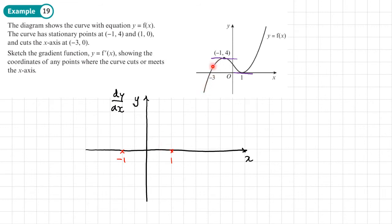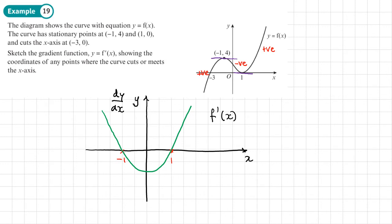This part of the original curve is increasing, so it has a positive gradient — above the axis. Then negative gradient — below the axis. Then positive gradient again — above the axis. So the derivative graph goes: above the axis, touching the axis at x = -1, below the axis, touching the axis at x = 1, then above the axis again. We label this graph as y = f'(x).